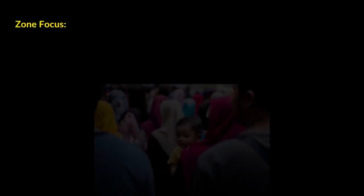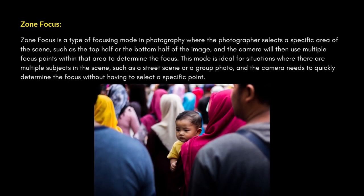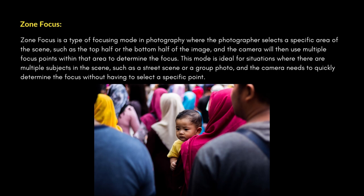Zone focus is a type of focusing mode in photography where the photographer selects a specific area of the scene — such as the top half or the bottom half of the image — and the camera will then use multiple focus points within that area to determine the focus.